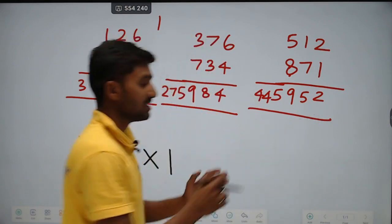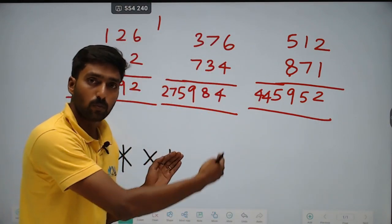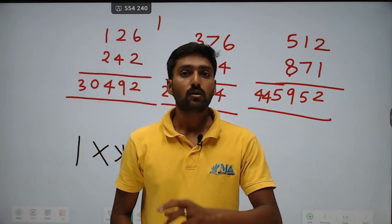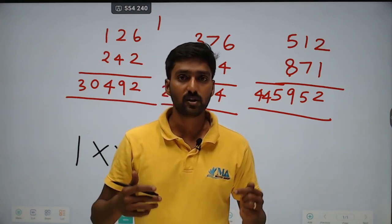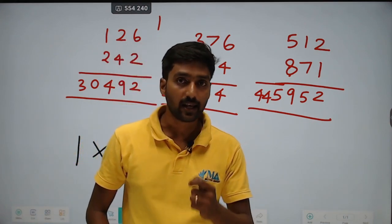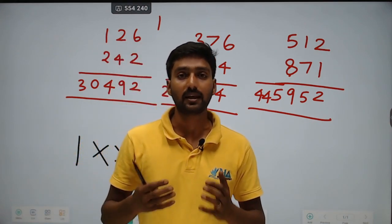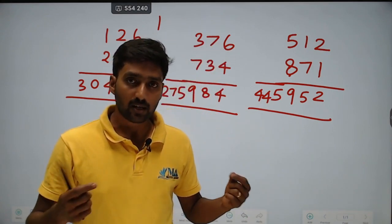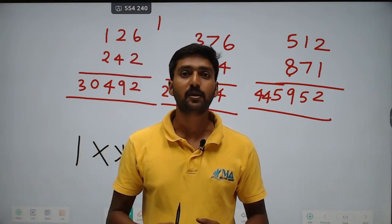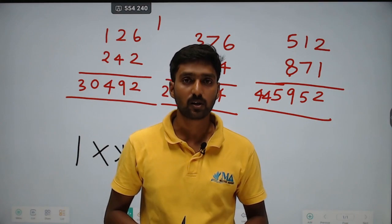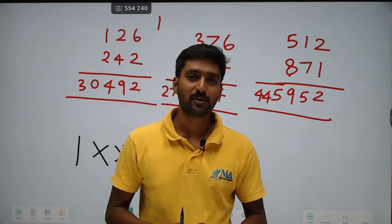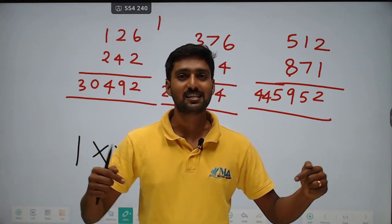So these are the steps for 3-digit number multiplication. If you practice more problems related to 3-digit into 3-digit, then you can crack competitive exams very easily. This video will be useful for those preparing for aptitude and competitive exams like GATE, IBPS, RRB, and SSC. For the next video on two-number multiplication, click on the link. Please subscribe to the Masters Academy YouTube channel and click on the bell button.